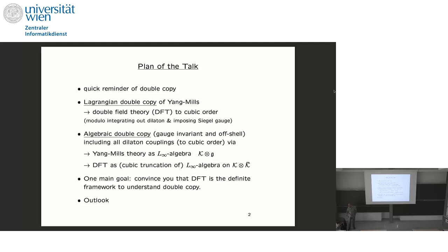Let me start with a brief outlook. So here's the plan of the talk. First I will give you a quick reminder of double copy. Double copy is something developed in the amplitudes community — it's a method to go from gauge theory to gravity amplitudes. This is not an audience of experts, I gather, but I won't need much of it.